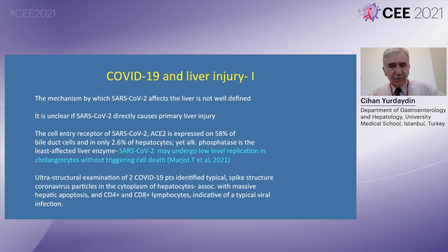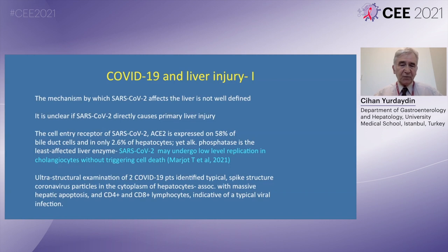An explanation has been put forward suggesting that SARS-CoV-2 may undergo low-level replication in cholangiocytes without triggering cell death. Another study suggesting SARS-CoV-2 affects the liver directly showed that ultrastructural examination of two COVID-19 patients identified typical spike structure coronavirus particles in the cytoplasm of hepatocytes, and this was associated with mitochondrial apoptosis and CD4, CD8-positive lymphocytes, indicative of a typical viral infection.